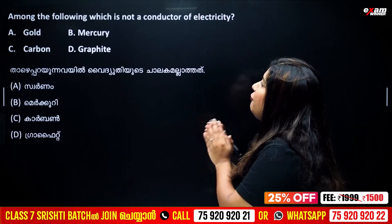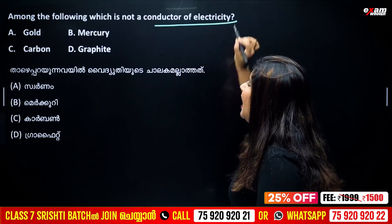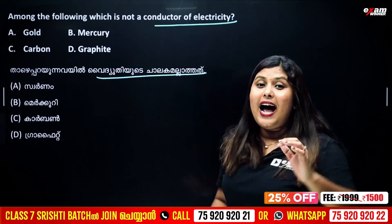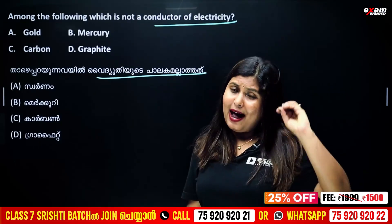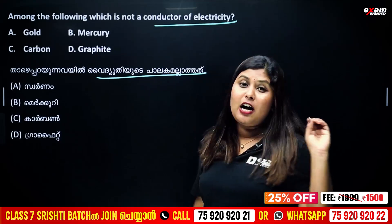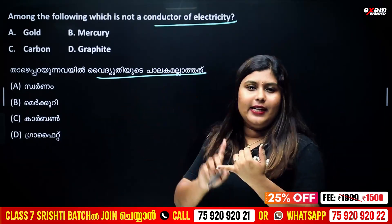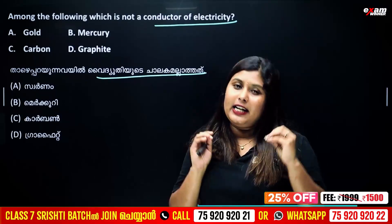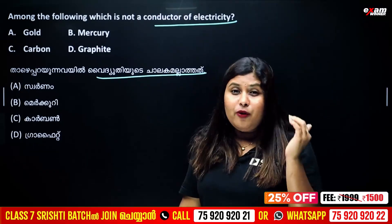Among the following, which is NOT a conductor of electricity? In that case, all of these are: zinc, mercury, carbon, graphite. Mercury and graphite are conductors. This is carbon — so what is carbon? Carbon is the answer here.